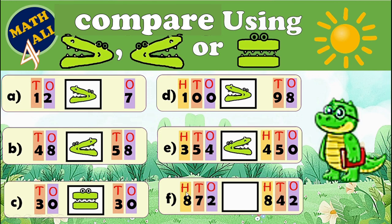Now the next example: 872 and 842. What should we do? We look at the biggest place value — the hundreds place. Here we have 8, and on the other side we also have 8. So we look at the next place — the tens place. Here we have 7, and on the other side we have 4. Which is bigger, 7 or 4? Yes, 7 in the tens place is more than 4. So Number Gator will choose 872. Let's read: 872 is greater than 842. And that was our lesson — thank you!